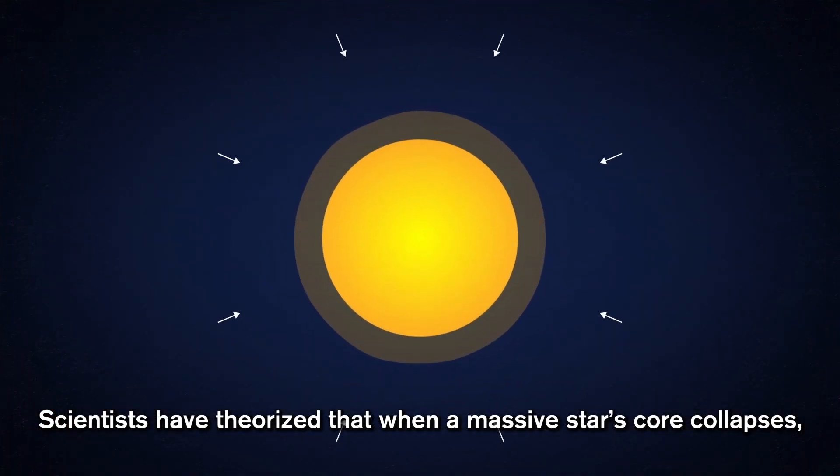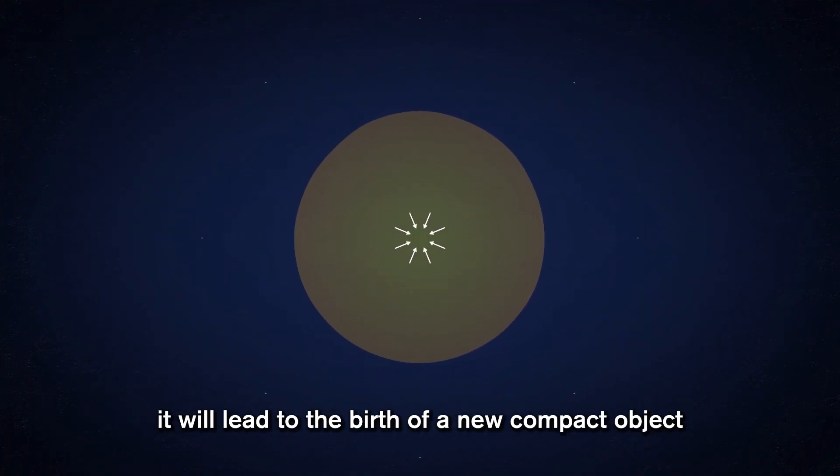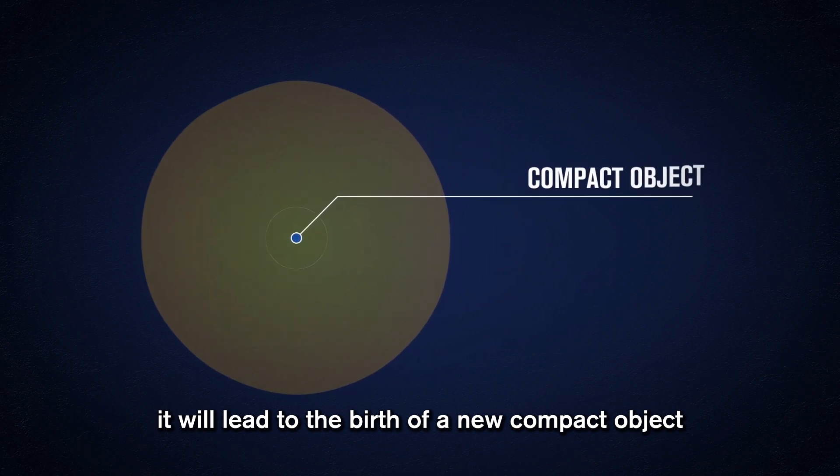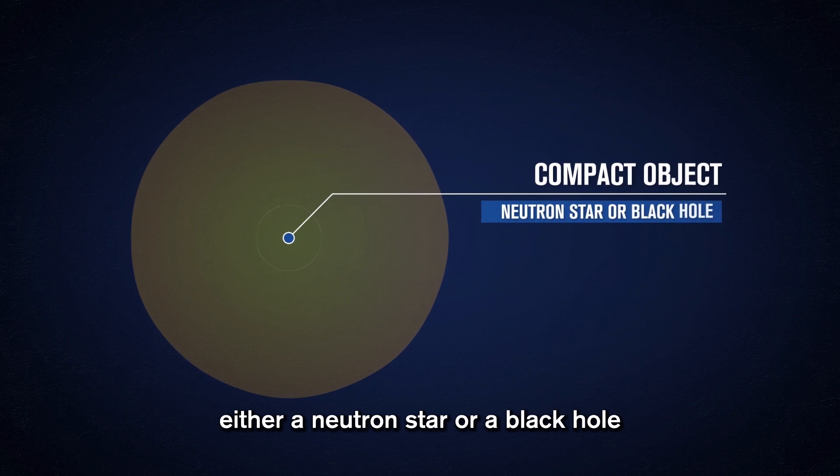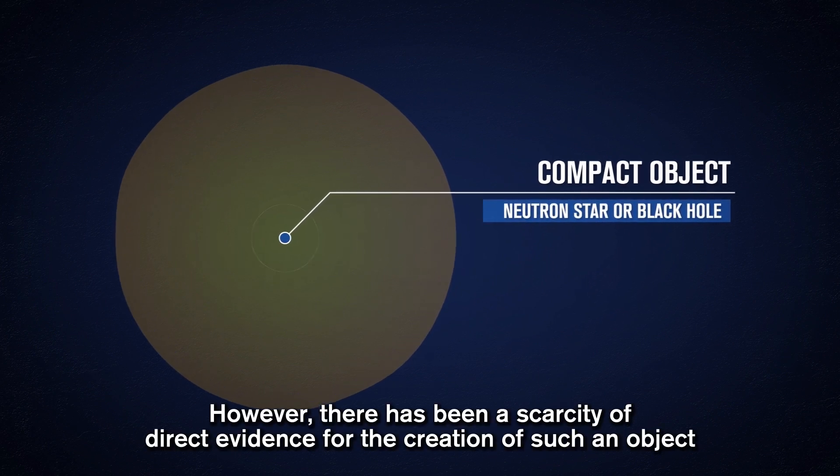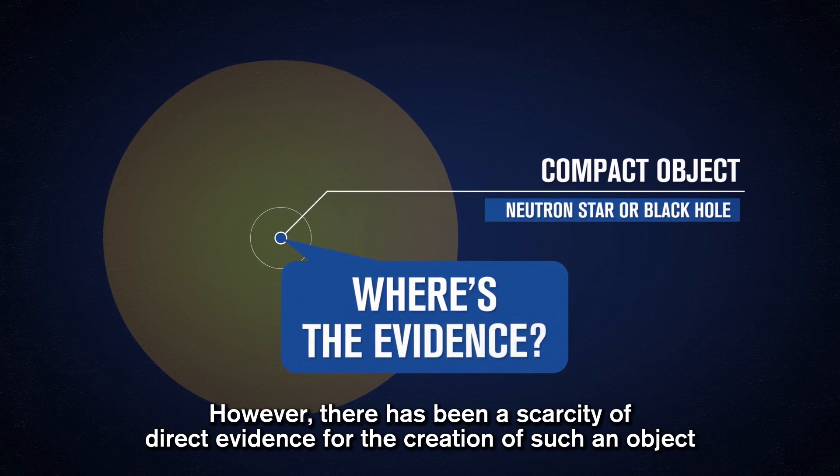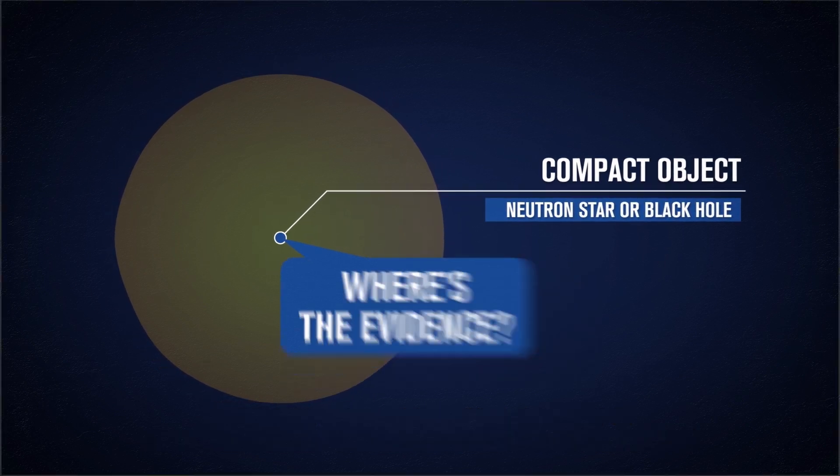Scientists have theorized that when a massive star's core collapses, it will lead to the birth of a new compact object, either a neutron star or a black hole. However, there has been a scarcity of direct evidence for the creation of such an object.